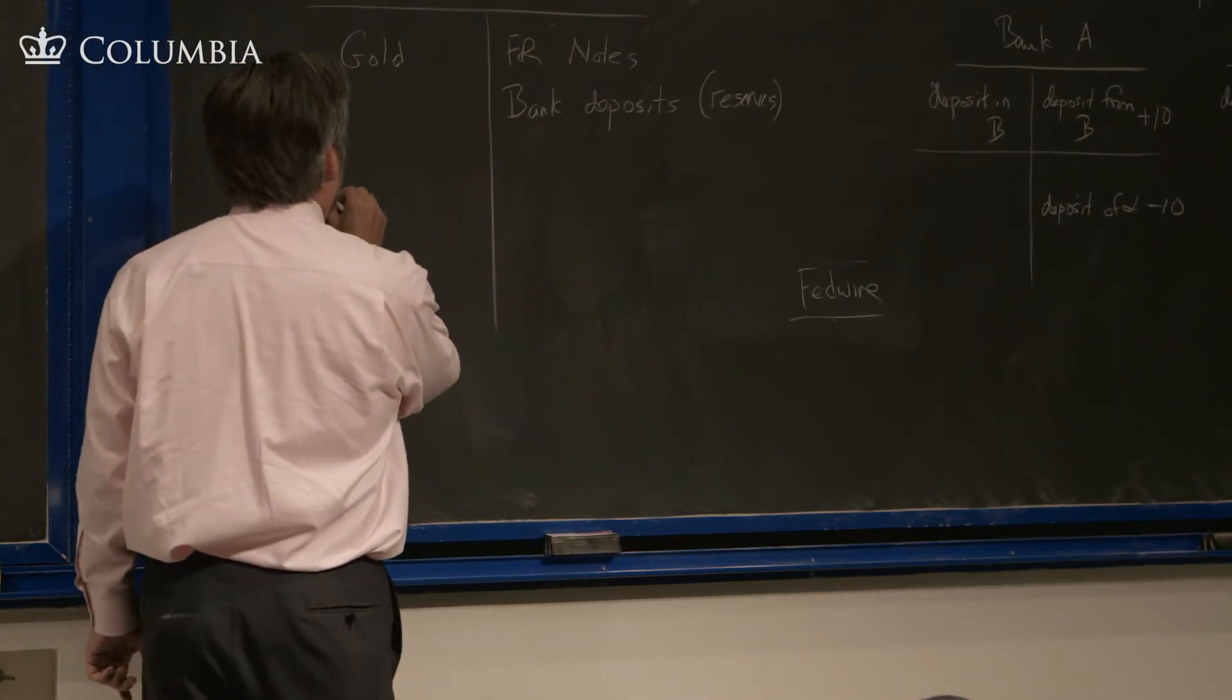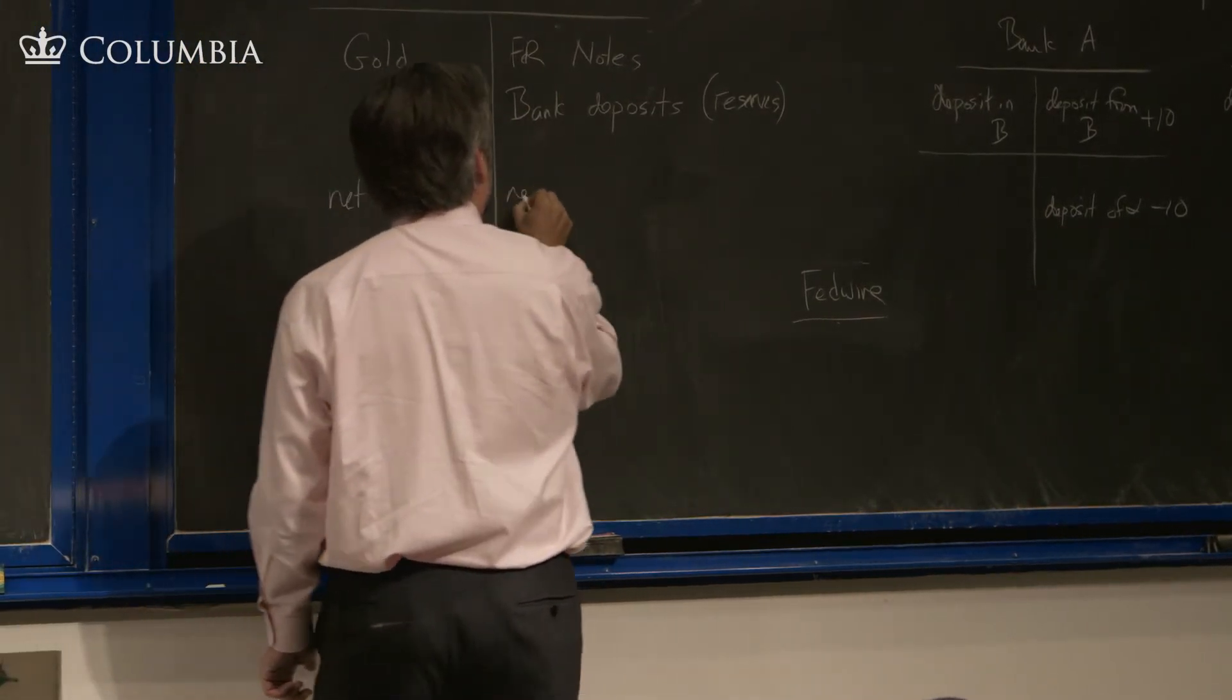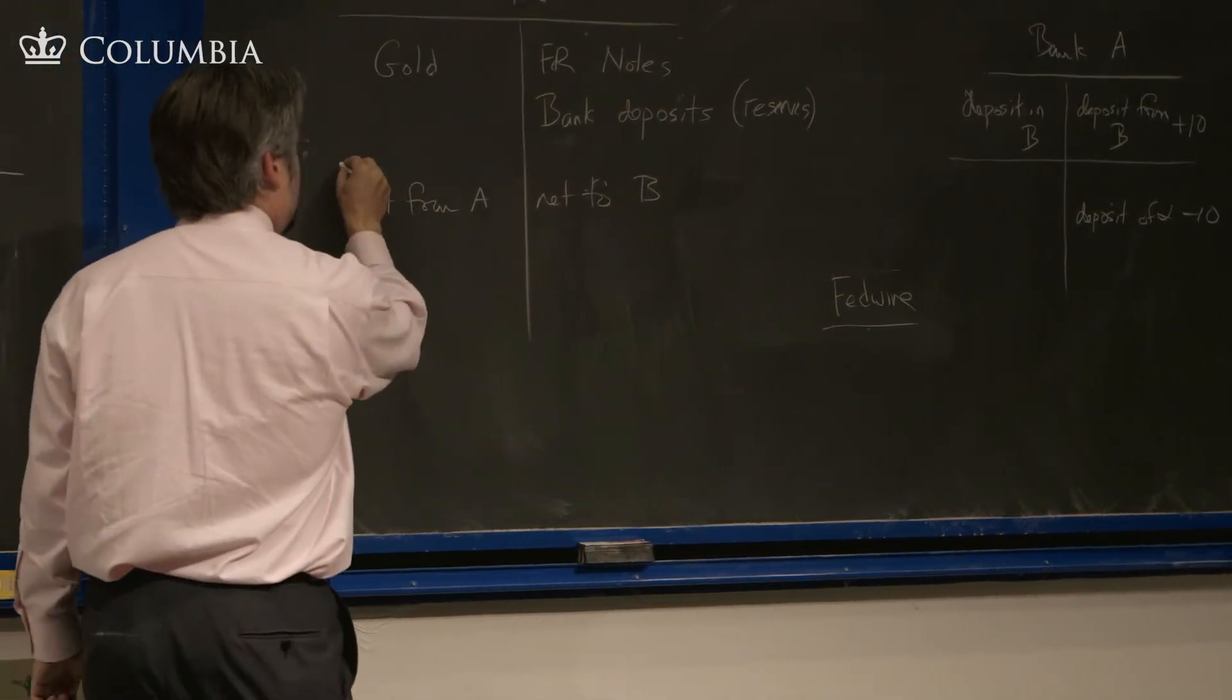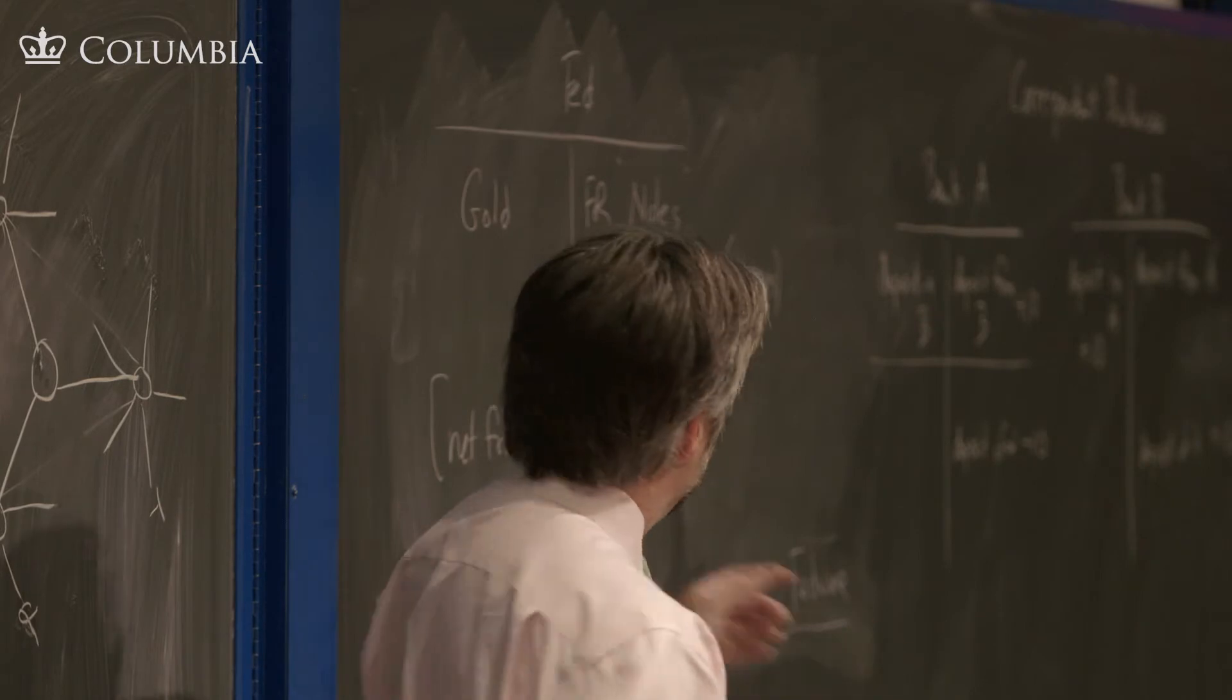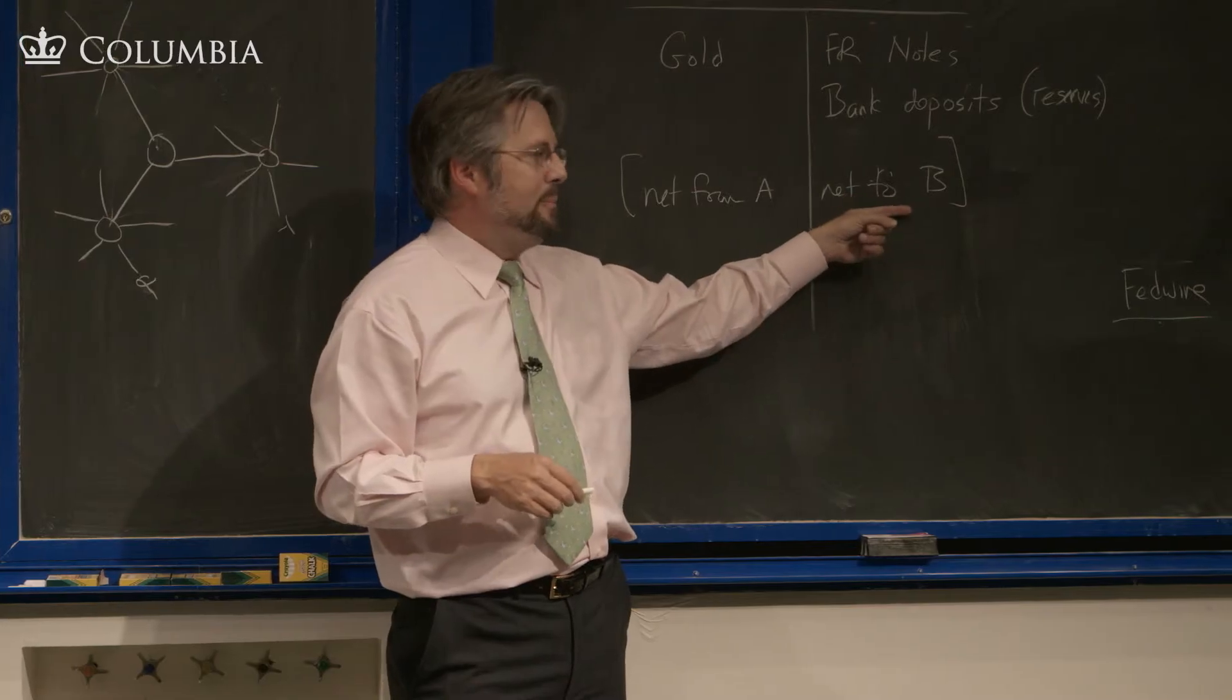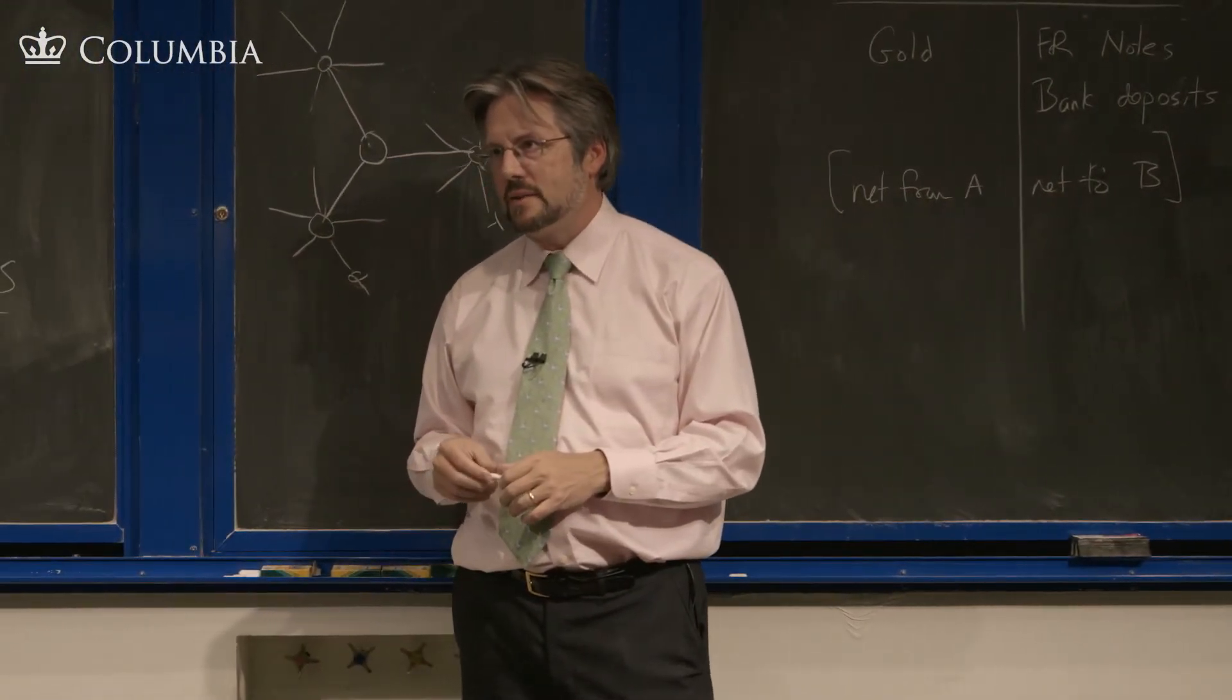So there's net from A, net to B. This intraday credit could be built up. And one way that you could settle this is basically for B to make a loan to A through the Fed funds market. That's one way.